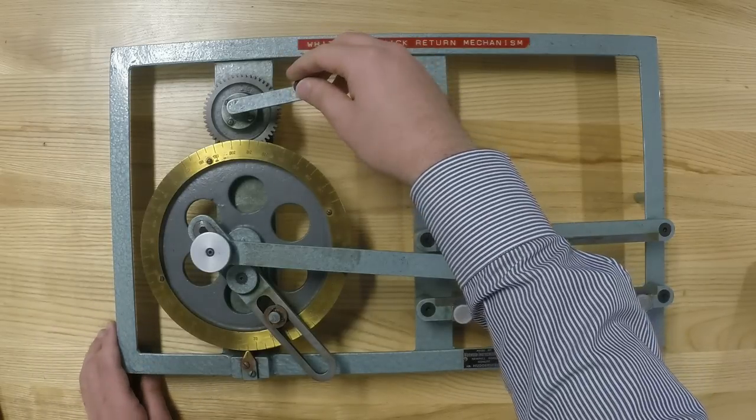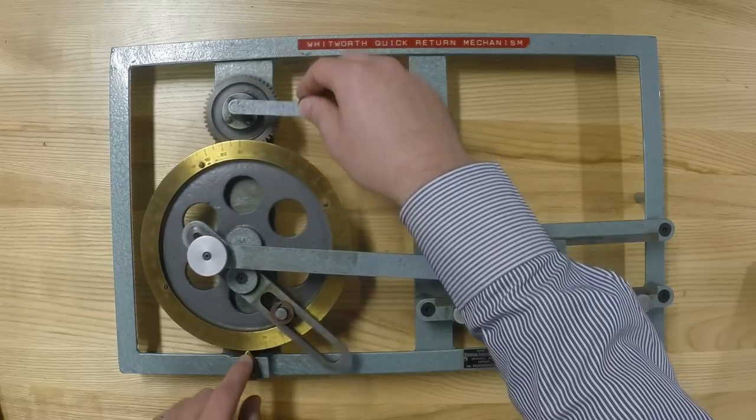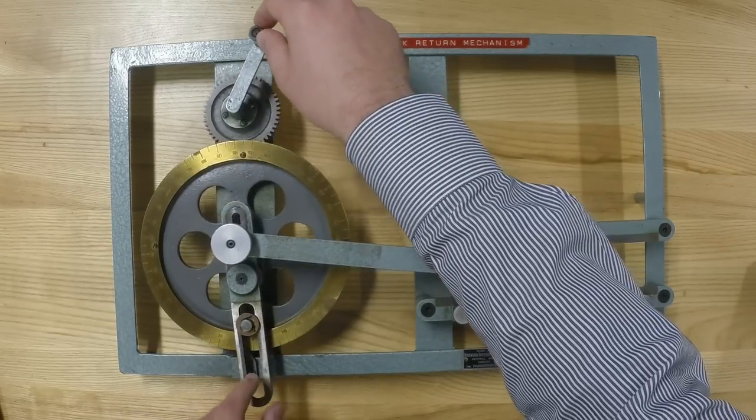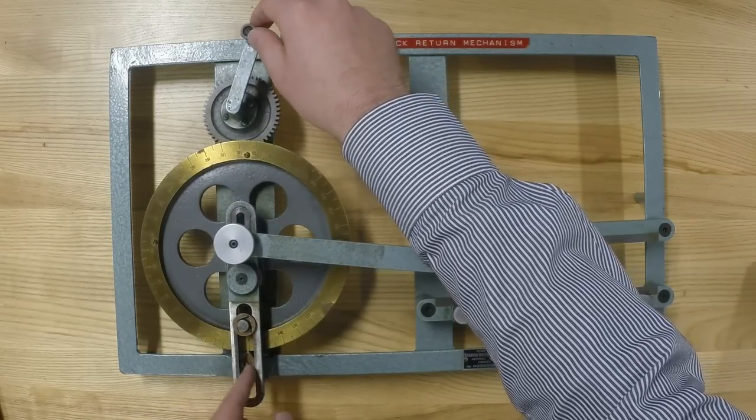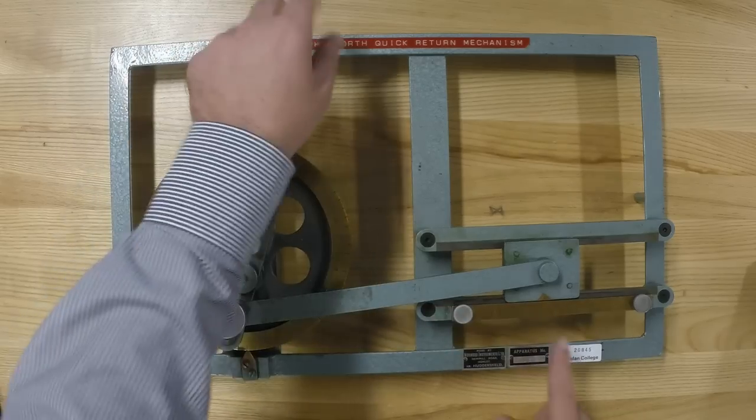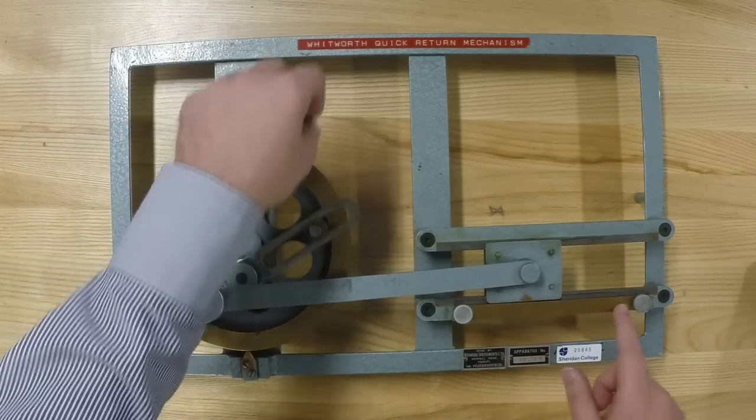So this one that you crank, there is a pin here that you're going to see where you are. So you align this to zero. So zero is aligned here. You turn and we will read the linear reciprocating motion on this ruler here.